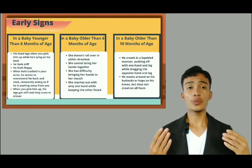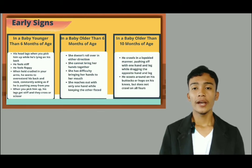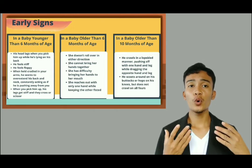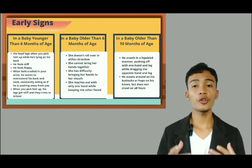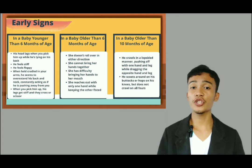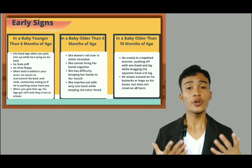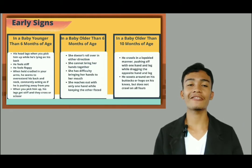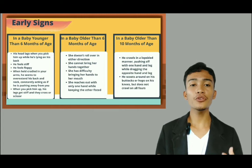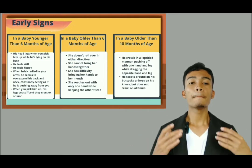Here are the signs of cerebral palsy by age. In a baby younger than six months of age, his head lags when you pick him up while he's lying on his back. In a baby older than six months of age, he or she doesn't roll over in either direction. In a baby older than ten months of age, he or she crawls in a lopsided manner, pushing off with one hand and leg while dragging the opposite hand and leg, or scoots around on his buttocks or hops on his knees but does not crawl on all fours.